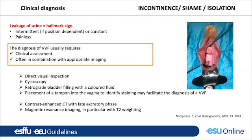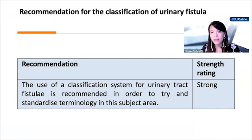The hallmark sign of vesicovaginal fistula is leakage of urine, which can be intermittent or constant, but painless. Diagnosis usually requires a clinical assessment combined with appropriate imaging. You need to make a direct visual inspection, perform cystoscopy, and retrograde bladder filling with colored fluid is essential. A tampon can be placed into the vagina to identify staining. Sometimes contrast-enhanced CT scan with a late excretory phase and MRI — in particular with T2 sequences — can be helpful if other structures are involved or diagnosis is difficult. This is the recommendation of the EAU guidelines.